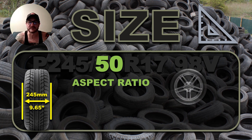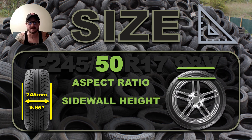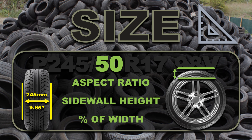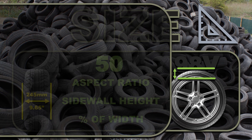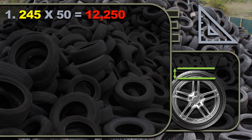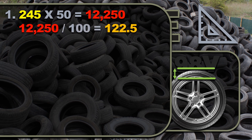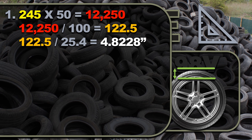Next we have the second half of our aspect ratio — the sidewall height. The 50 is a percentage of our width, so we use these two values to figure it out. Here's the first way: multiply the aspect ratio values together — 245 times 50 — and we get 12,250. Then divide by 100 because 50 is a percentage, giving us 122.5 millimeters sidewall height. Dividing by 25.4 gives us 4.8228 inches.